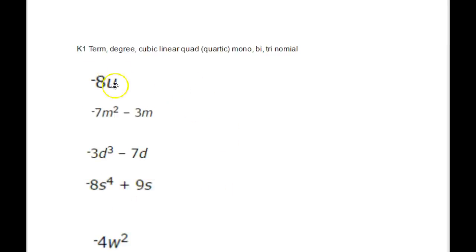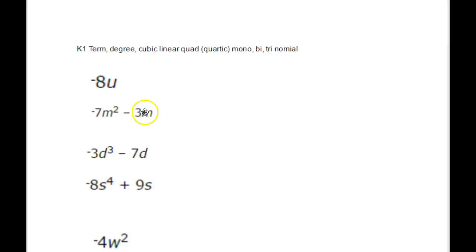Here we have some examples — in one there's only one thing added or subtracted, and in another there's two — but they're both polynomials because polynomials include any length of expression. When we talk about different parts of the polynomial, we divide it by the things that are added together. Inside one term you can see things that are multiplied together, but nothing added or subtracted. Once you add or subtract, you've created two terms instead of one.